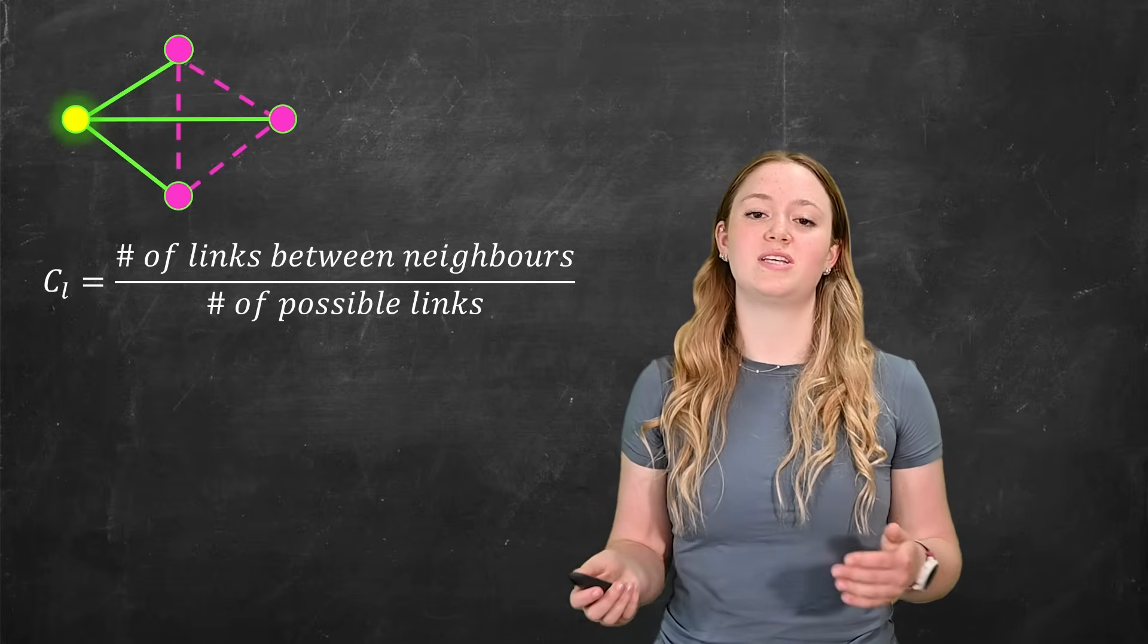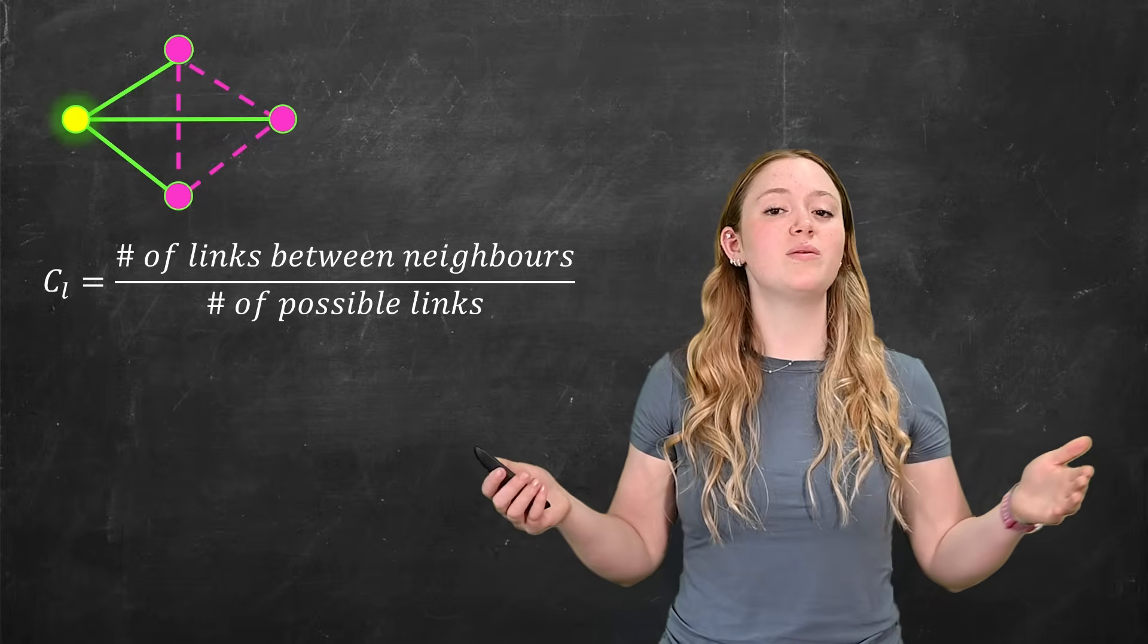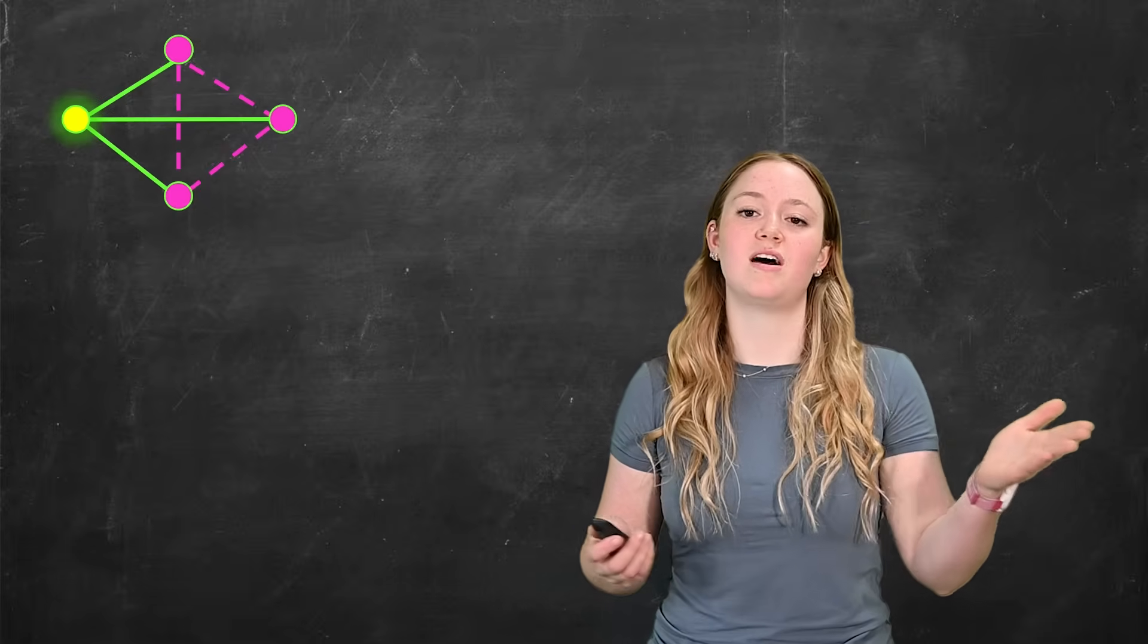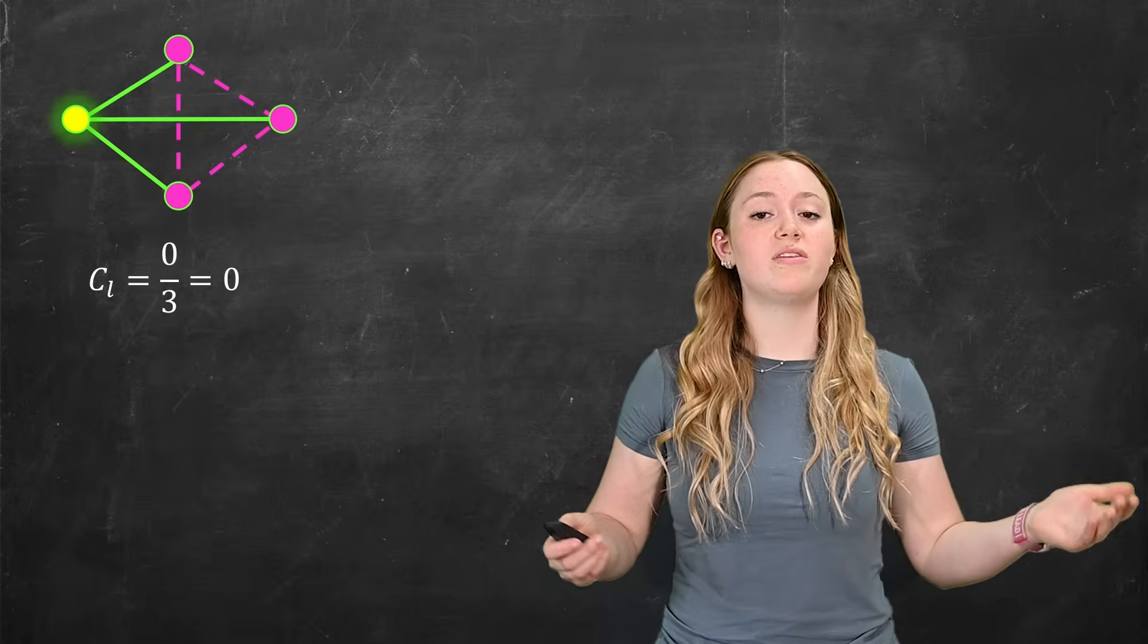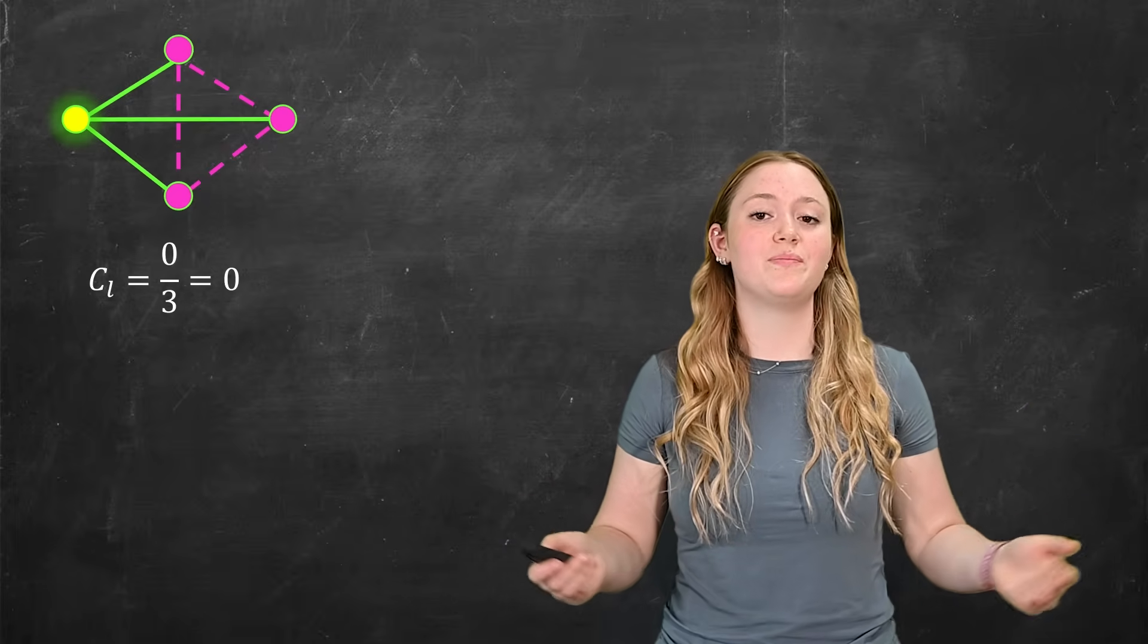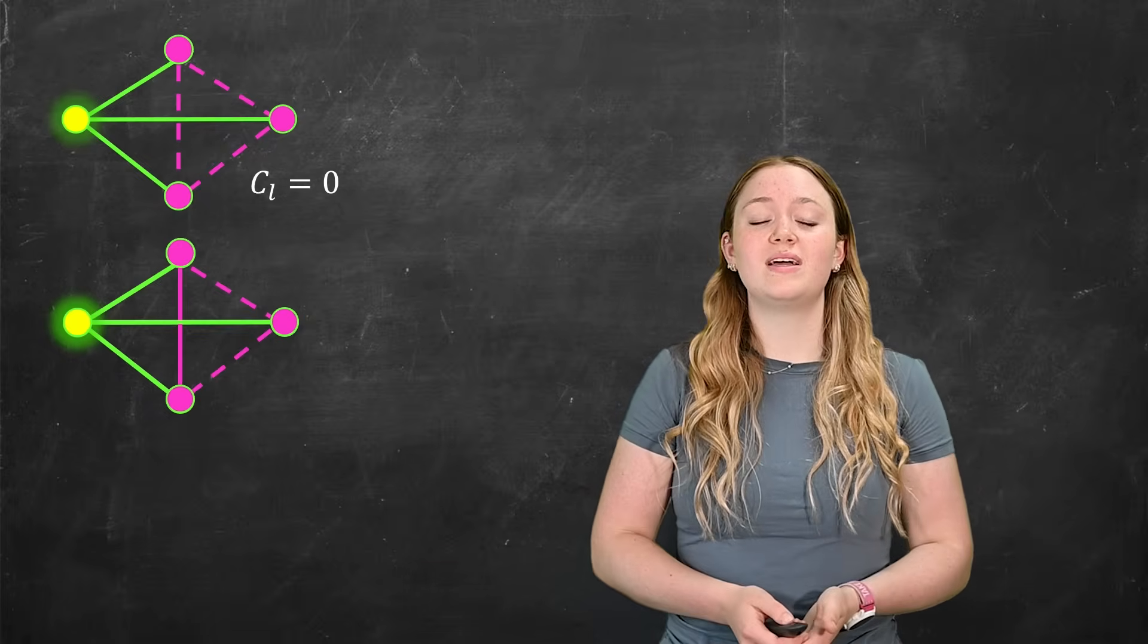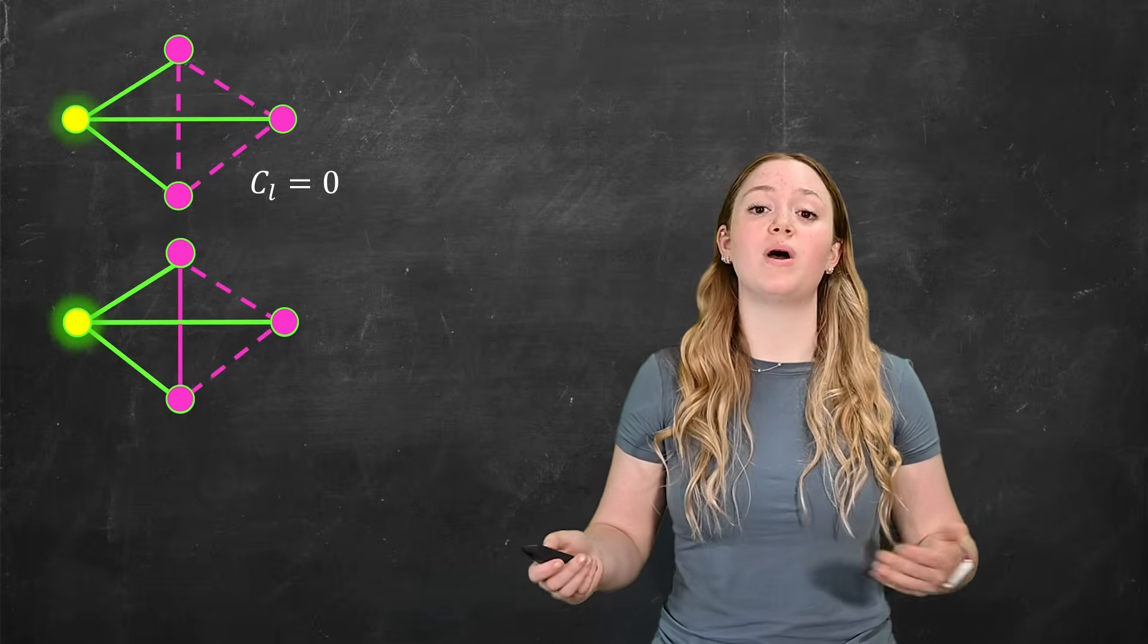When we say links, this is what we're talking about. Now let's look at some examples. Firstly, we can look at what happens if there's no connection between the neighbors, which is what you can see here with the dotted pink lines. So in this case, we would divide zero by three, which is just going to be a clustering coefficient of zero. What if there's one connection between the neighbors? Well, in this case, it's pretty easy. The local clustering coefficient is just going to be one third.